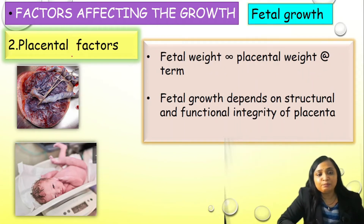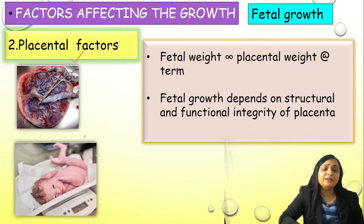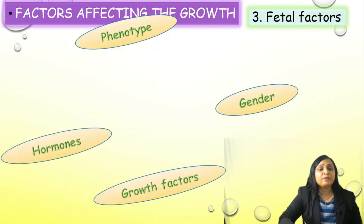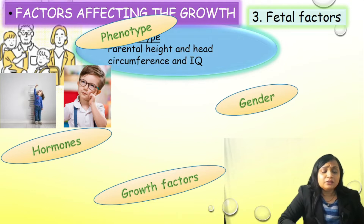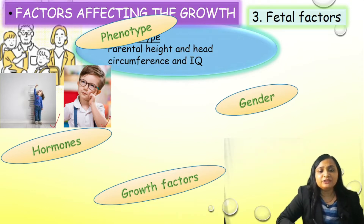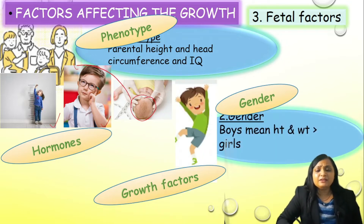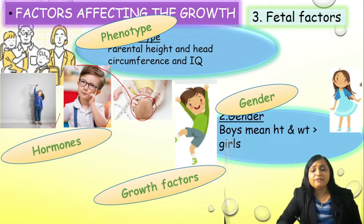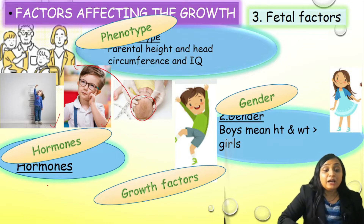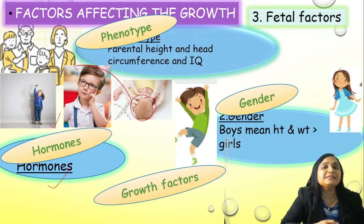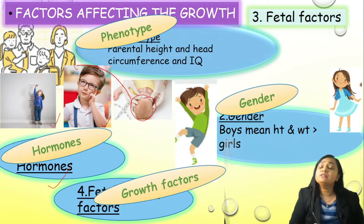After the maternal factor, let us move to the second factor — placental factor. Placenta is very important: healthy placenta, healthy baby; good placental weight, good fetal weight. If you see the fetal factors, the height of the child as well as intelligence quotient and head circumference directly depend on the parents. Similarly, it is a general rule that boys have a greater mean height and weight than girls. Hormones also play a very important role, and please pay attention to the upcoming slides because many questions are asked from the hormonal factors.